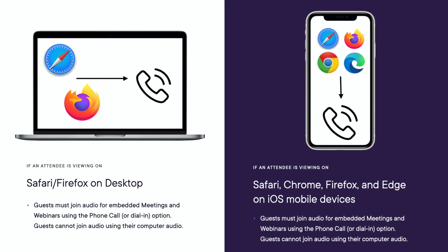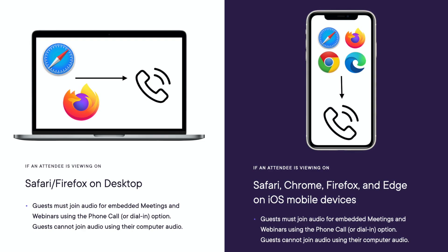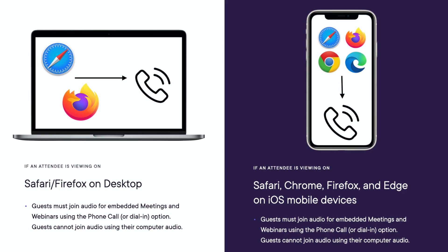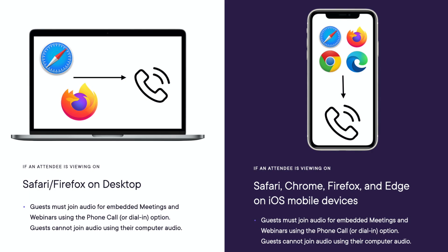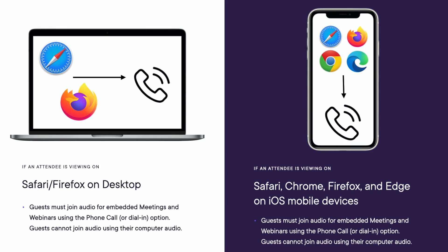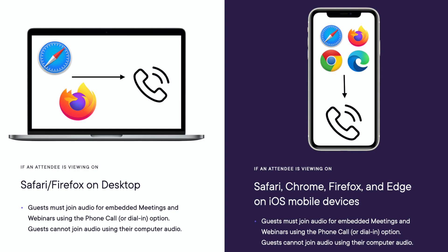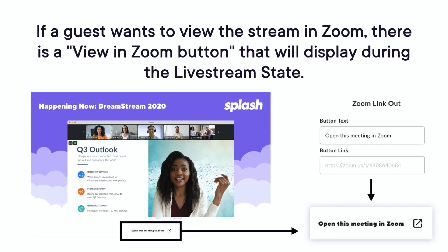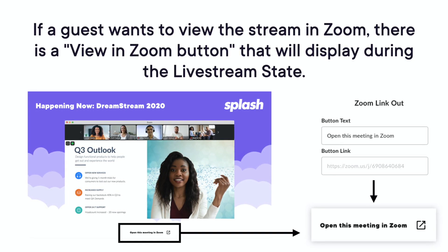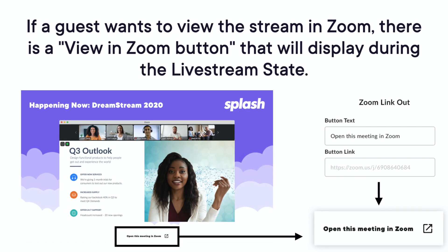If the attendee is viewing via Safari, Chrome, Firefox, or Edge on iOS mobile devices, they must also join audio for embedded meetings and webinars using the phone call or dial-in option. Guests cannot join audio using their computer audio. If for whatever reason a viewer wants to view the stream in Zoom, there is a 'View in Zoom' button that will display during the live stream state.